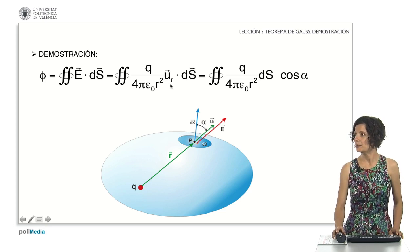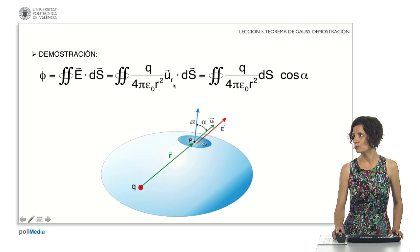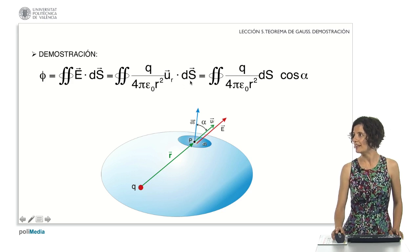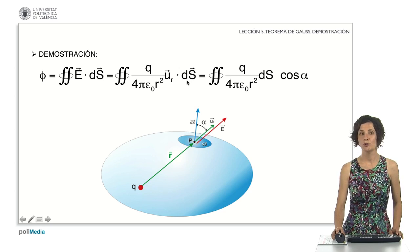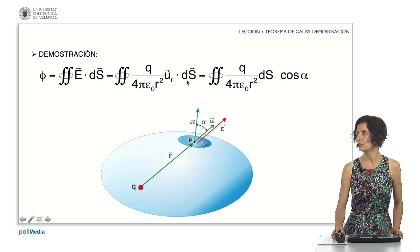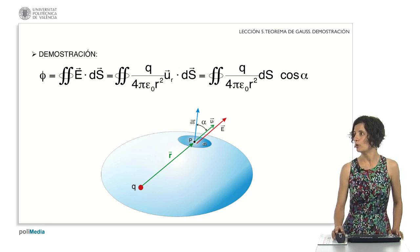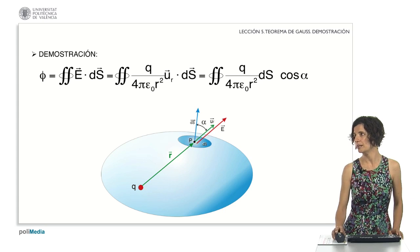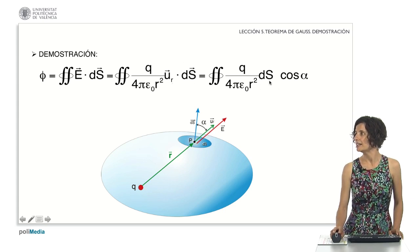In this expression, we see that we have the scalar product between the unit vector u sub r and the differential area vector. The scalar product is the product of the moduli multiplied by the cosine of the angle they form. Since the modulus of the unit vector u sub r is 1, we are left with the differential area times the cosine of alpha.